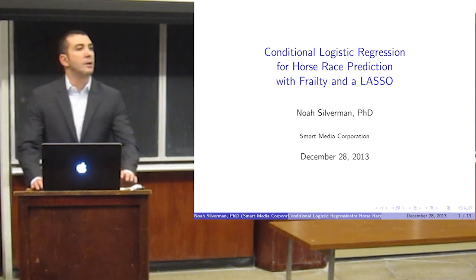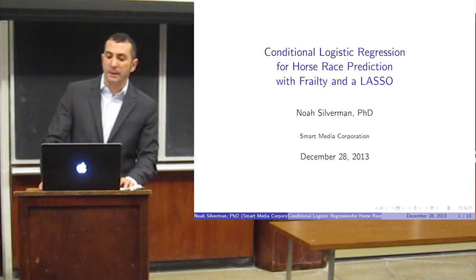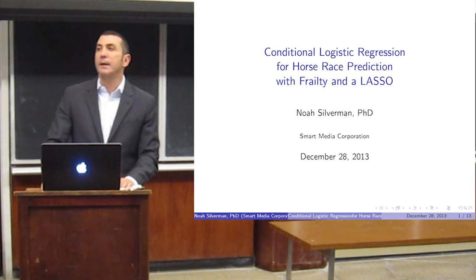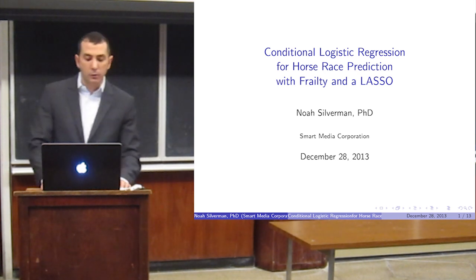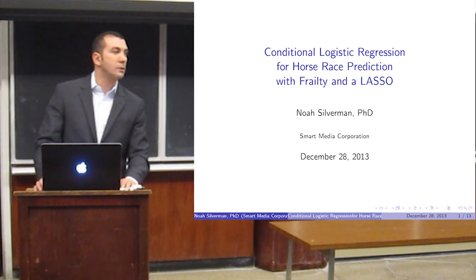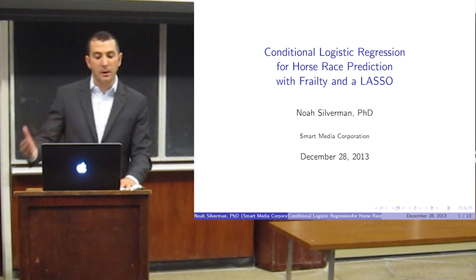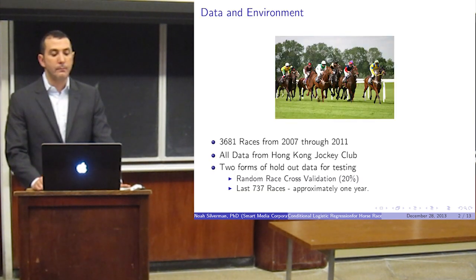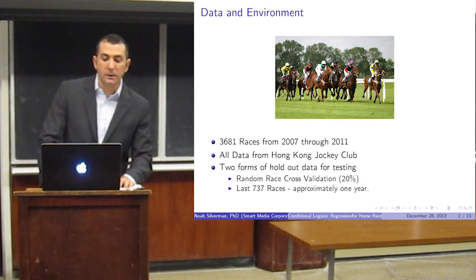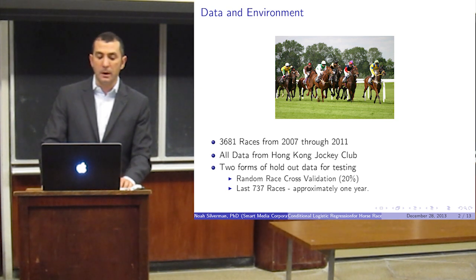I chose to look at horse racing in Hong Kong, as many other academics have. It's a small, tight race field. There are only two tracks and about 1,500 horses that race every year, so the data is very consistent and easy to analyze from year to year. I wrote software to scrape 3,681 races from the Hong Kong Jockey Club that took place between 2007 and 2011.